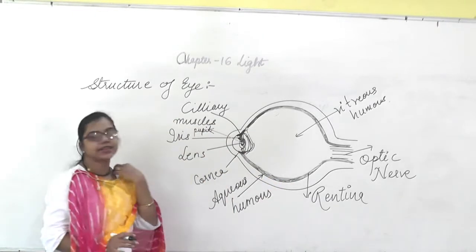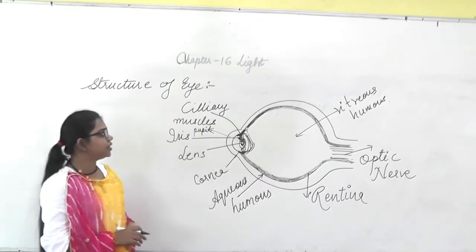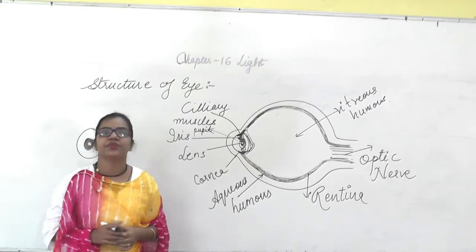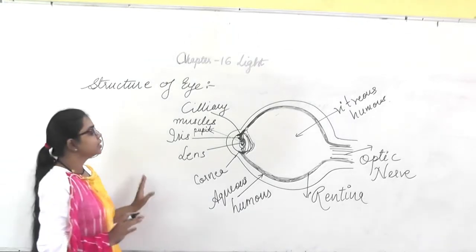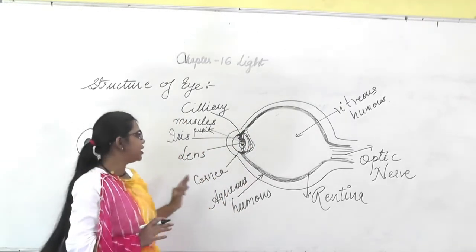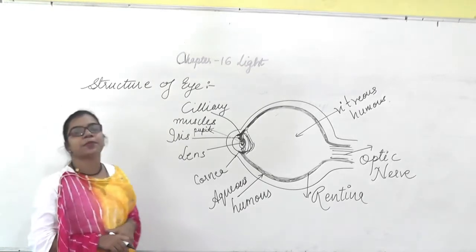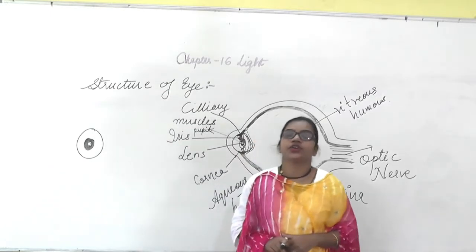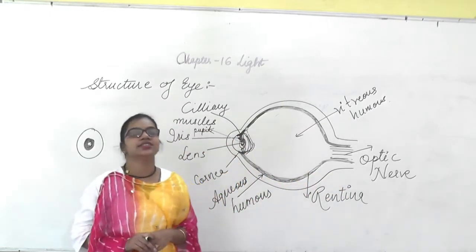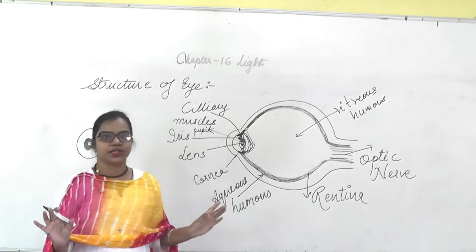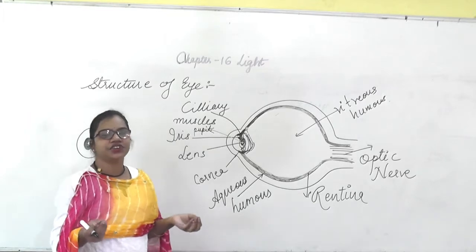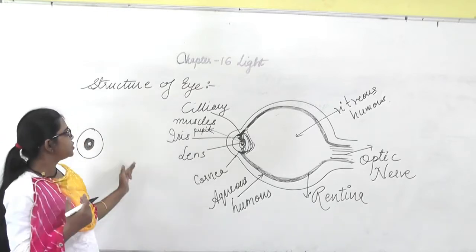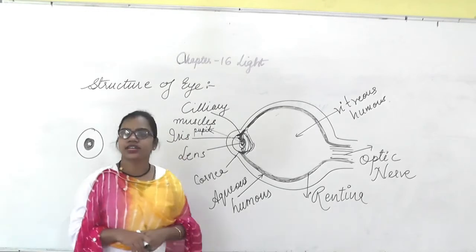Welcome everyone. We are studying Chapter 16: Light. Today we will study the structure of the human eye. Eyes are a very important part of a human being, because without eyes the whole world is like black — nothing is visible to us. We cannot understand the beautiful colors of the trees or see anything. So without eyes, the world is nothing to us. Let's study the structure of the eye.